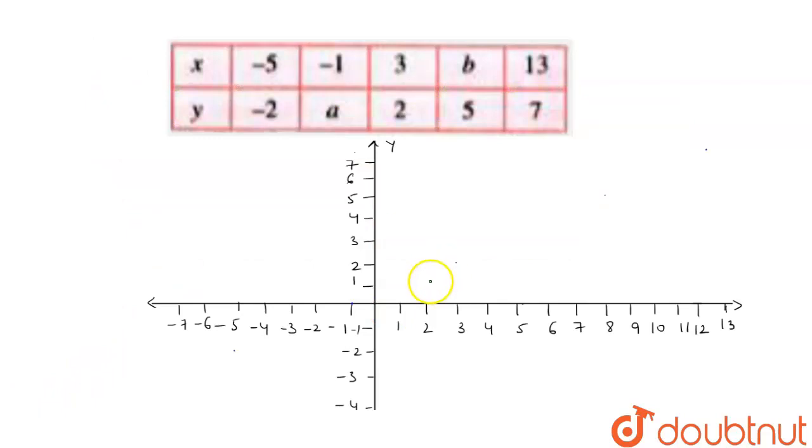So firstly we will draw our graph. This is our y-axis and this is our x-axis. Here we will plot our points that are given to us. The first point is -5, -2.